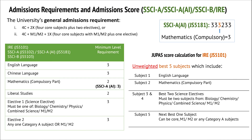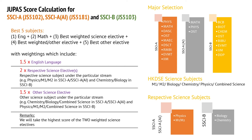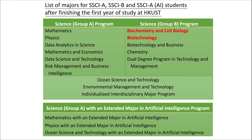If you are applying for the undergraduate program through JUPAS, our university has a general admission requirement of a minimum level of 332233. You can refer to the table for the details. Here is the JUPAS score calculation for the program. For admission into the Science A, Science A plus AI, or Science B program in the School of Science, we use this JUPAS admission formula, counting the best five subjects of your DSE scores, in which some relevant science subjects will be weighted. Since we are using school-based admission, if you want to pursue a life science major — either BCB or Biotechnology — you should select the Science Group B program as your first choice.